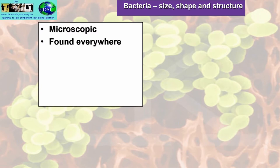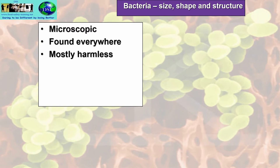They're found everywhere, so they're ubiquitous. They're mostly harmless — it's only the minority that are what we call pathogens. The word pathogen comes from the Greek word pathos, meaning illness. So a pathogen causes illness. Food poisoning can kill, but the actual definition for pathogen is causes illness.